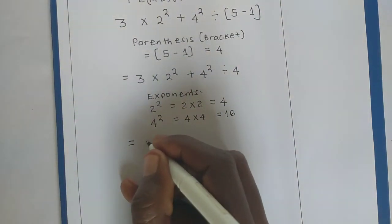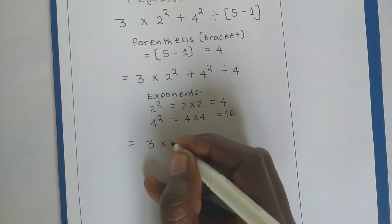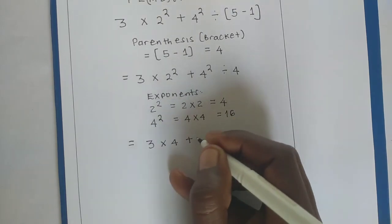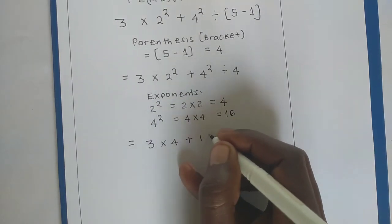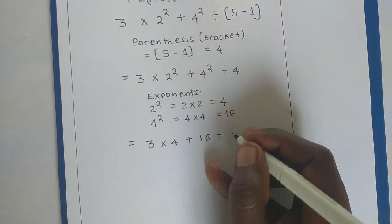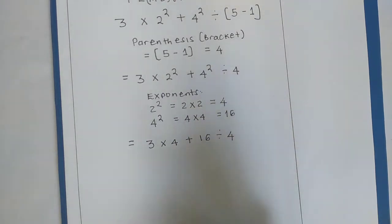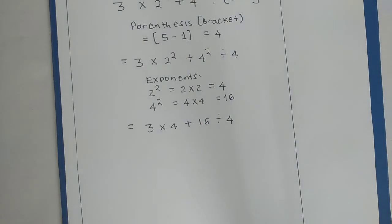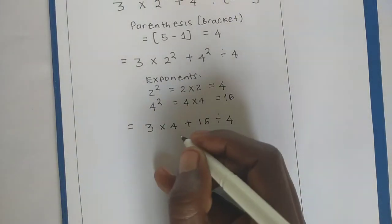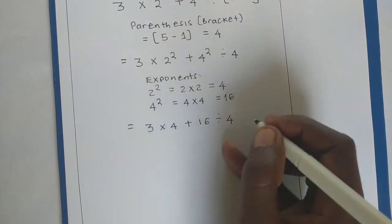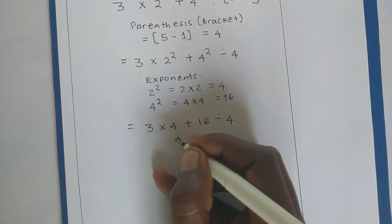Now, we shall have 3 times 4 plus 16, we are dividing it by 4. Now, let's see which one counts first. I have multiplication and division, but we know from this law, multiplication will actually count first.